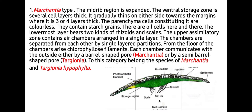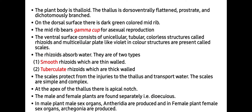The chambers are separated from each other by single-layered partitions. From the floor of the chamber arises chlorophyllous filament. Each chamber communicates with the outside by a barrel-shaped pore as in Marchantia, or by a semi-barrel shape in Targionia. To this category belong the species of Marchantia and Targionia hypophylla. The midrib is prominent or flattened while the wings are narrow, and at the ventral surface you find both rhizoids and scales.